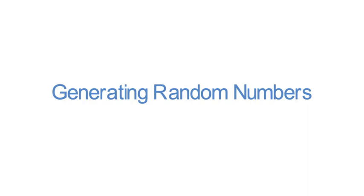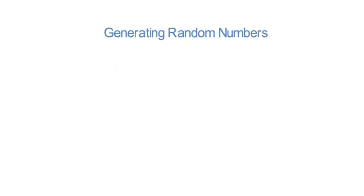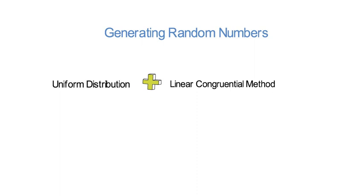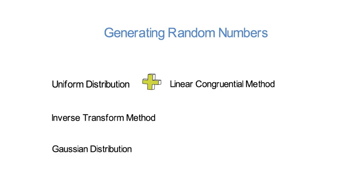This video explains how to generate random numbers with a computer. It covers three concepts: first, how to simulate from a uniform distribution, either U(0,1) or any U(A,B) distribution, by means of the linear congruential method. Second, the inverse transform method. And third, how to simulate from a Gaussian N(0,1) or N(μ, σ²) distribution using the Box-Müller method.